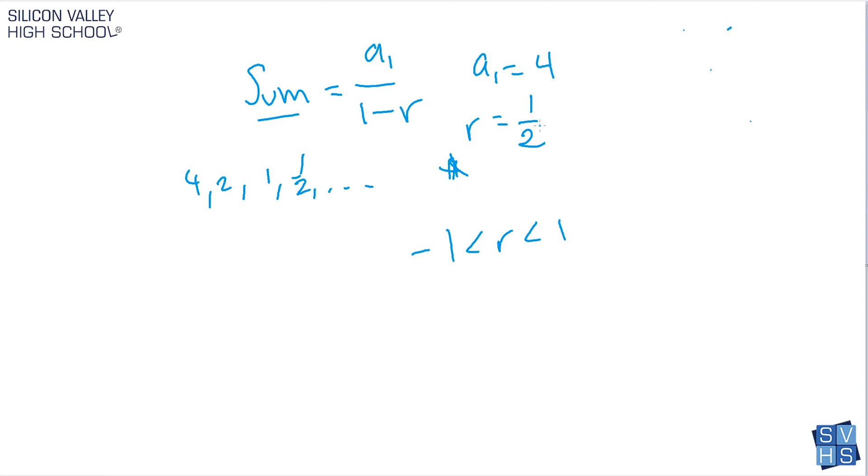So completing this problem now. Let's go ahead and do it. So we have the sum is equal to a to the 1, which we agreed was 4, over 1 minus r, which is 1 half.